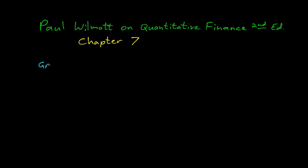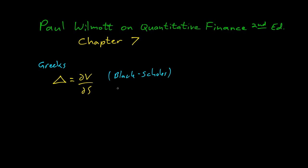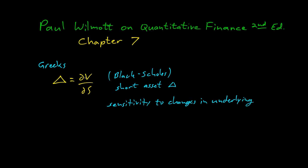In chapter seven we learn about the Greeks — Greek letters and some other names representing various mathematical quantities. Delta is partial of V with respect to S, which we saw in Black-Scholes: it was the amount of stock we had to short to balance the long option. Delta represents the sensitivity to changes in the underlying. If delta is three and the asset price goes up one, the option price goes up three — but that's just a linear model.